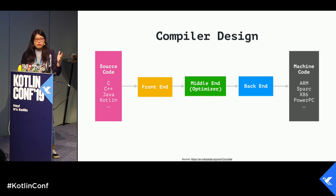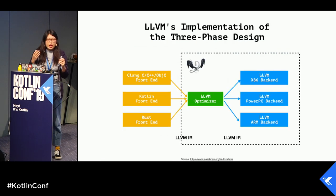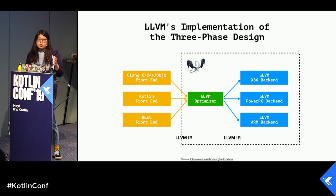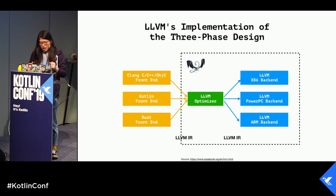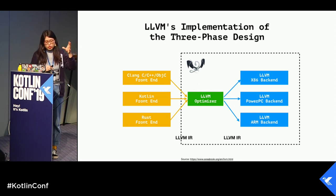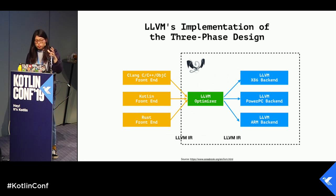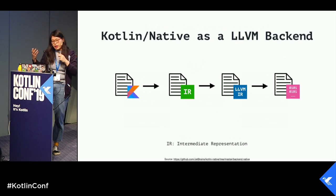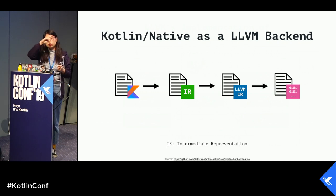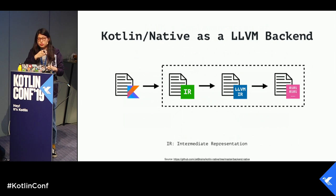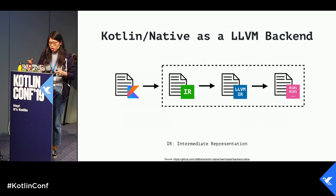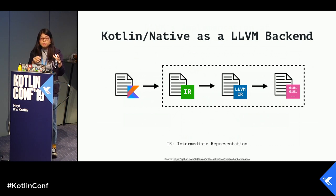LLVM is one of the most popular compiler infrastructures today. A lot of things are built on top of it — Rust, Swift, and many other compilers. It uses different levels of intermediate representation. So how do we understand Kotlin Native as an LLVM backend? Starting from source code, we go through the Kotlin compiler to obtain the first level of intermediate representation. The Kotlin Native compiler then converts it into an LLVM intermediate representation, and from there into machine code — that's how we obtain native binaries for different targets.